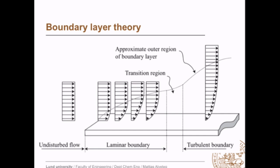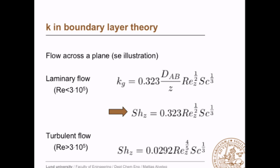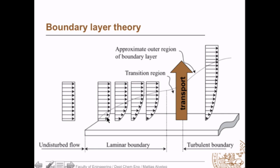In the boundary layer theory, we look at the situation where we have some kind of flow along some surface. The flow is going from left to right, but what we are interested in is the transport from the surface out — orthogonal to the flow. In boundary layer theory, the mass transfer coefficient can be calculated by specific equations. At laminar flow, the mass transfer coefficient k equals a constant times the diffusivity divided by the position at which we measure. So the mass transfer coefficient will be different at different positions along the surface.